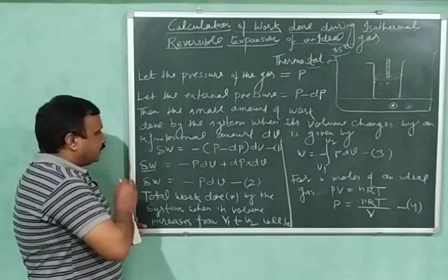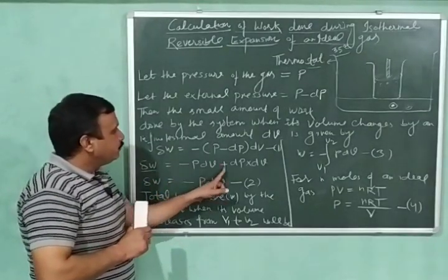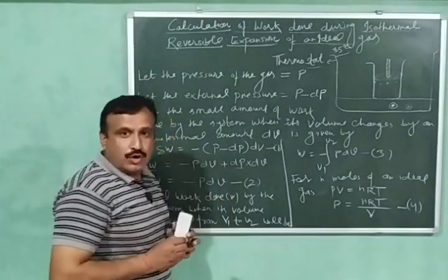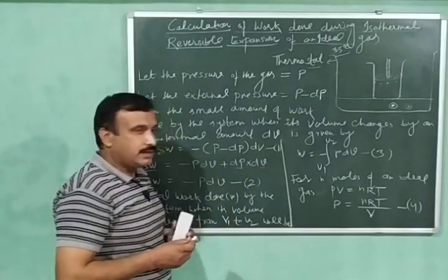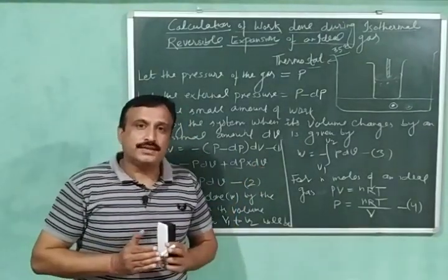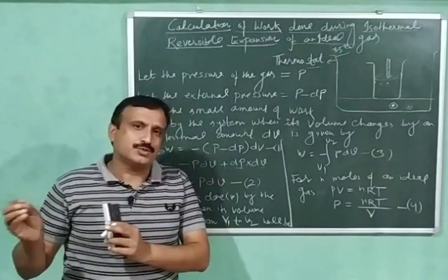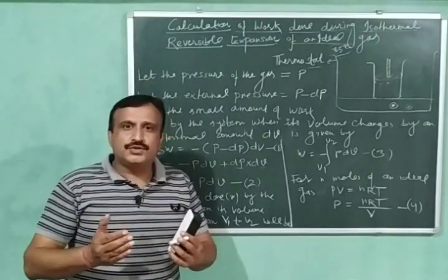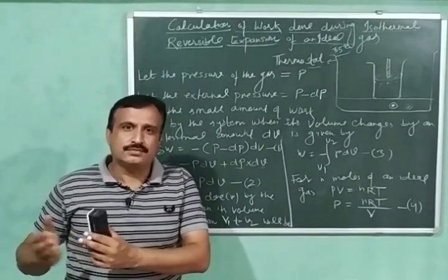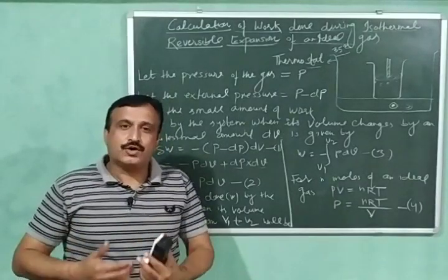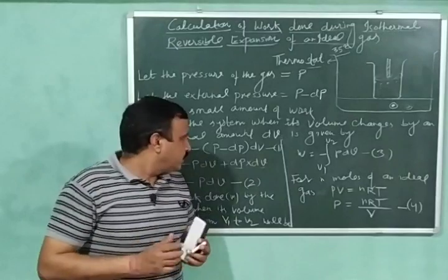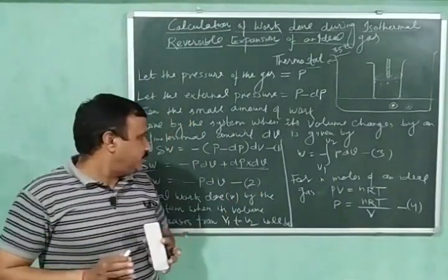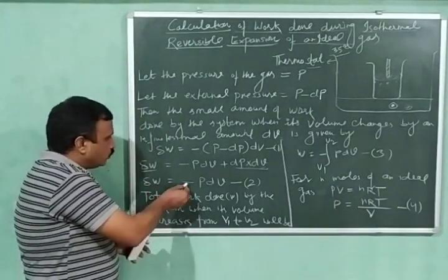Expanding this: delta w = −p·dv + dp·dv. Now dp is a very small quantity and dv is again a very small quantity, so the product dp·dv is a very, very small quantity and can be neglected. You can verify this by multiplying 0.0001 by 0.0001 — the product is negligibly small. Therefore we have delta w = −p·dv. Let this be equation number two.